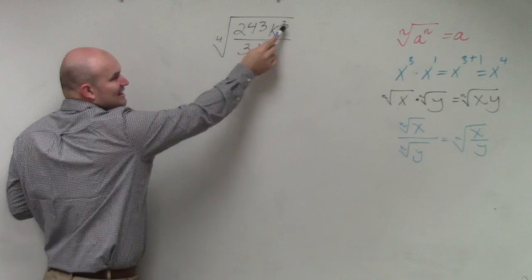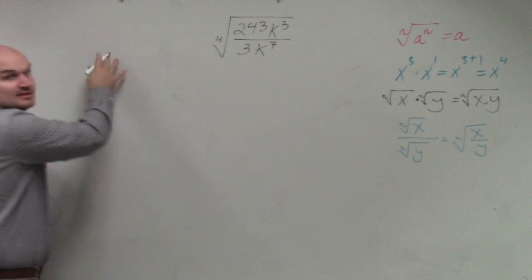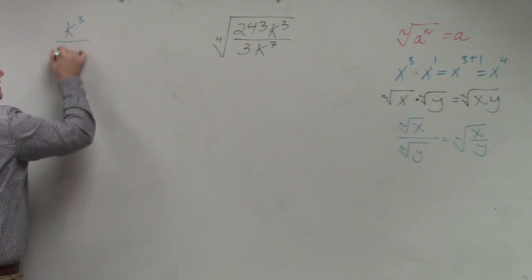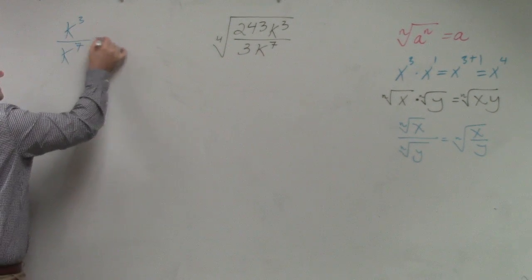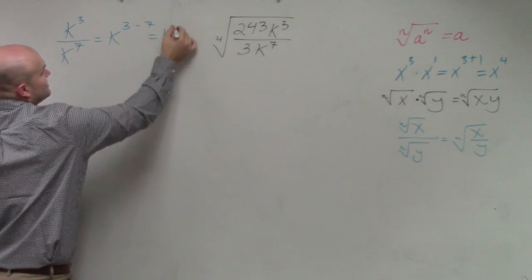I cannot divide k to the third divided by k to the seventh. However, I can simplify that. If you remember, k cubed divided by k to the seventh equals k to the 3 minus 7, which equals k to the negative 4, right?